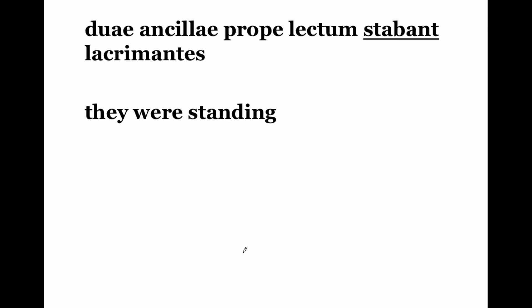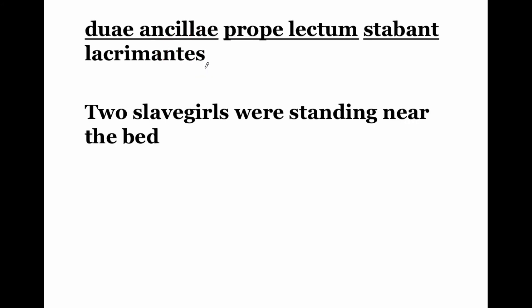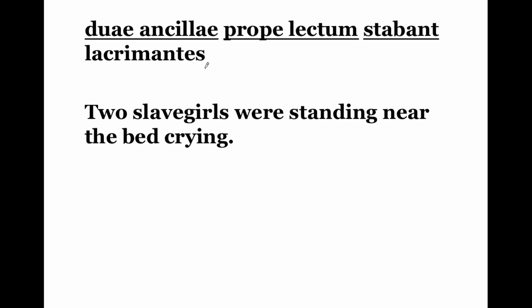They were standing — there's our main verb. Does it have a subject? We look for nominative plurals because -bant is a plural ending. Indeed, duai ankilai is our subject — two slave girls were standing. What's left is where they were standing and an action expressed with a present active participle. Remember, the present active participle has -ns in the nominative singular and -nt- followed by third declension endings — just as mater becomes matres, lacrimans becomes lacrimantes. They were standing prope lectum, crying. The two slave girls were standing near the bed, crying.